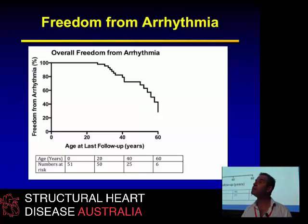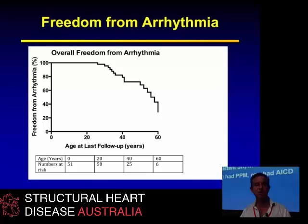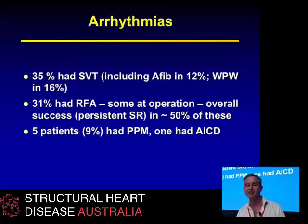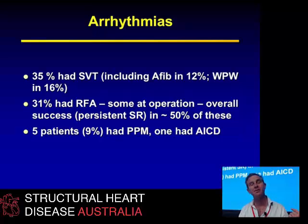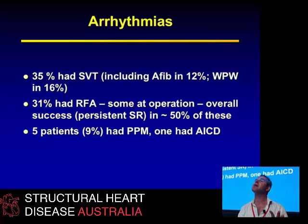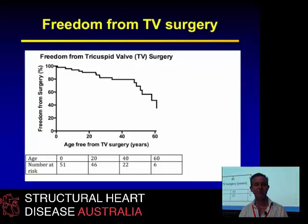Arrhythmia is common and has many varieties which are challenging to treat. 35% of our group had SVT, and it wasn't all atrial flutter. It's well known that 10 to 20% of them have right-sided WPW, which is difficult but amenable to radiofrequency ablation. 30% had RFA, some at the time of operation, and there was persistent sinus rhythm in only half of them — so it is a difficult group for ablation. Five patients had a permanent pacemaker and one had an AICD.